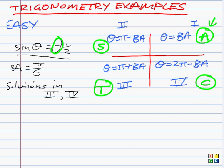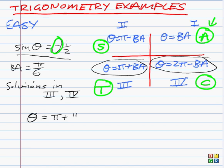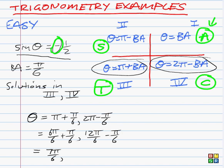So therefore, if solutions are in three and four, then they'll be pi plus basic angle and two pi minus basic angle. So therefore, theta will be pi plus pi on six and two pi minus pi on six. Now pi, think about pi as six pi on six, and think about two pi as twelve pi on six, because that makes the arithmetic easier. So therefore, the final answer is seven pi on six and eleven pi on six.